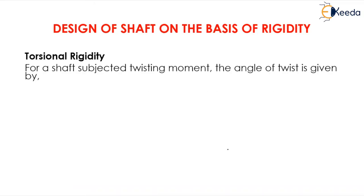Design of shaft on the basis of rigidity is divided into two parts: torsional rigidity and lateral rigidity. For a shaft subjected to twisting moment, the angle of twist is given by theta equals TL upon GJ, which should be less than or equal to theta.